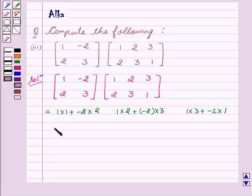And in the second row, we get 2 into 1, plus 3 into 2. Then, 2 into 2, plus 3 into 3. Then, 2 into 3, plus 3 into 1.